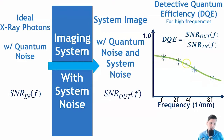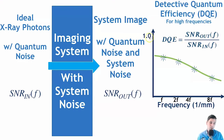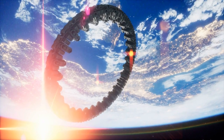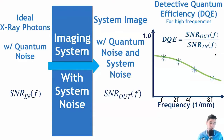The detective quantum efficiency is the ratio of the signal-to-noise out divided by the signal-to-noise in — it measures how efficiently your system and detector convert x-ray photons to the measured signal. This is a function of spatial frequency, and we can make curves to see how efficient the system is. The goal would be to have a DQE of 1 for all spatial frequencies, as would be the case for a perfect detector, but those systems do not exist in reality.